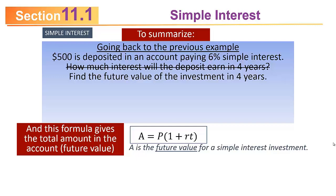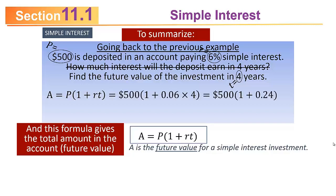Going back to the previous example, suppose I just want to find the future value of the $500 investment in four years. I can use A = P(1 + RT): plug in 500 for P, 0.06 for r, and 4 for t. Then 4 × 0.06 = 0.24; 0.24 + 1 = 1.24; and 1.24 × 500 = $620. The same answer as before. This formula is faster if all you want is the amount in the account.